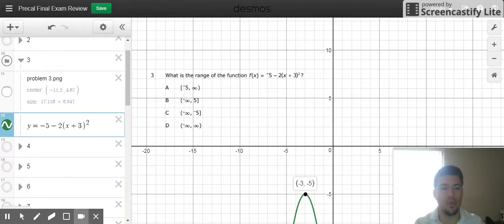So we're talking about range. We're talking about y values. You should be able to tell that your maximum y value is going to be negative 5. Your minimum y value is going to be negative infinity.